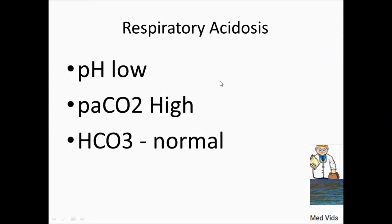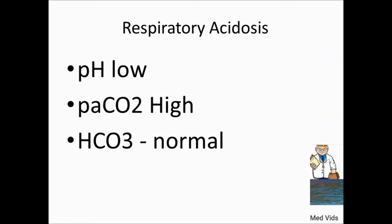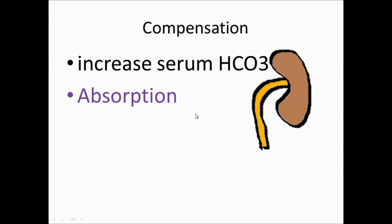For respiratory acidosis, the compensatory organ is the kidney. When PaCO2 is high, the kidney compensates by reabsorbing bicarbonate, which increases serum bicarbonate levels.